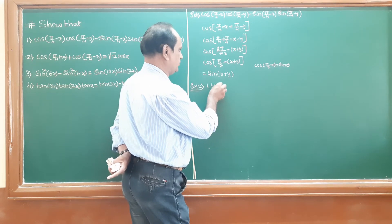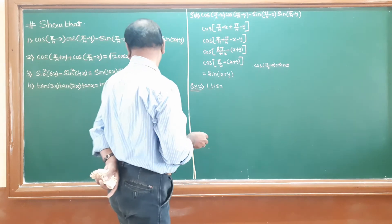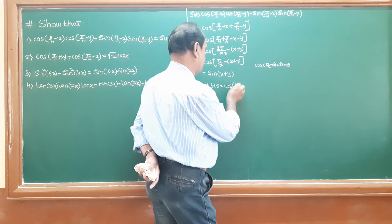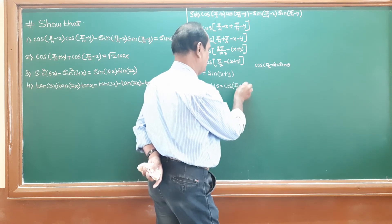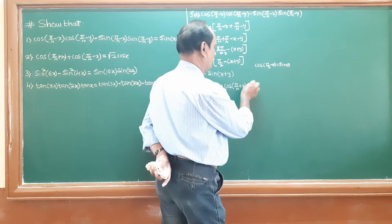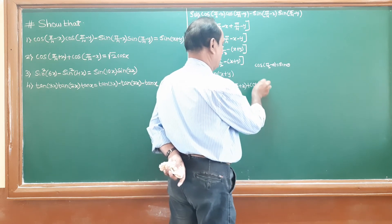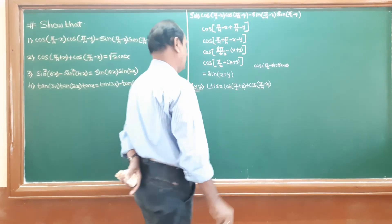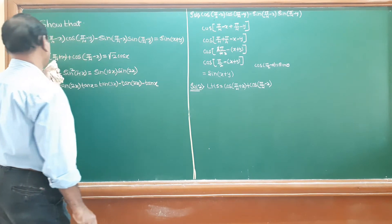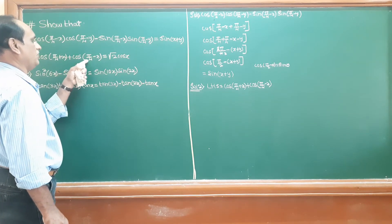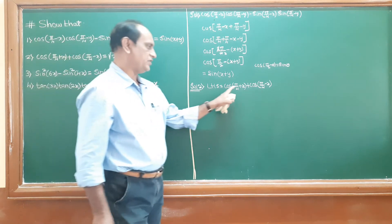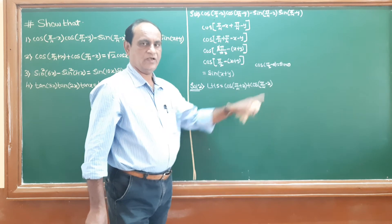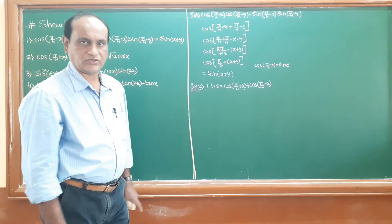LHS is equal to cos(π/4 + x) plus cos(π/4 minus x). Apply the formula for cos(x + y) and cos(x minus y). cos(x + y) equals cos x · cos y minus sin x · sin y, and cos(x minus y) equals cos x · cos y plus sin x · sin y.